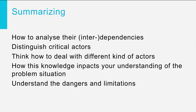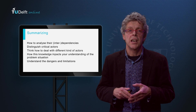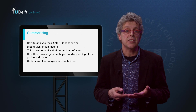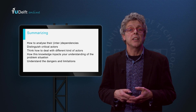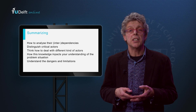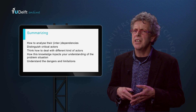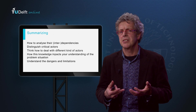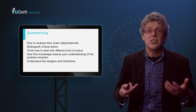I will now summarize what we learned in this second part of the lecture on how to do an actor network analysis. We looked at how to analyze the interdependencies by focusing on the resources and the willingness to use these resources and the dedication to solve the issue. In that way we were able to distinguish the so-called critical actors. We introduced the matrix distinguishing dedicated critical actors from non-dedicated and non-critical ones. We discussed how we can use these insights in the way we deal with different kinds of actors and how this knowledge impacts your understanding of the problem situation. Finally, we discussed the dangers and limitations of these actor network inventories — the snapshot character and the danger of self-fulfilling prophecies.